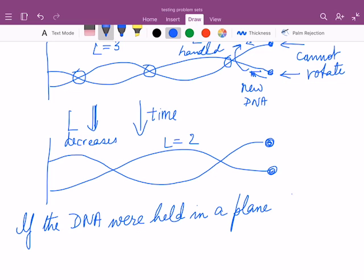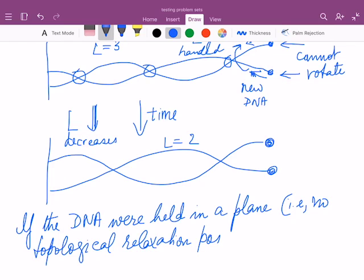As I just explained, the linking number has to decrease because the polymerase is unwinding the DNA. And if the DNA were held in a plane, that is, no topological relaxation possible, then T would also decrease.